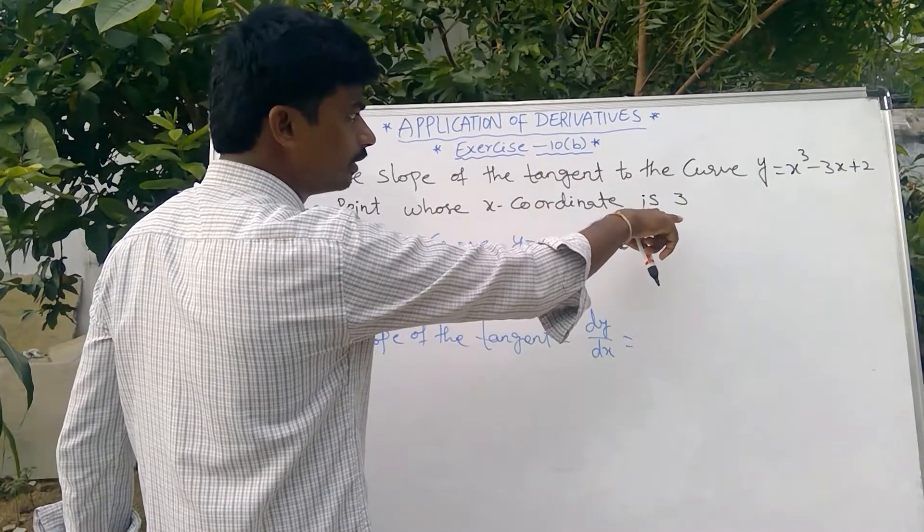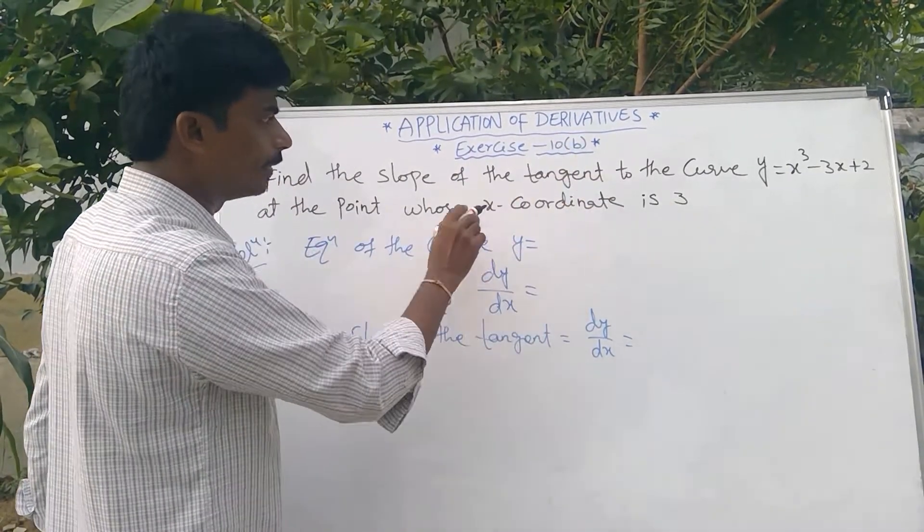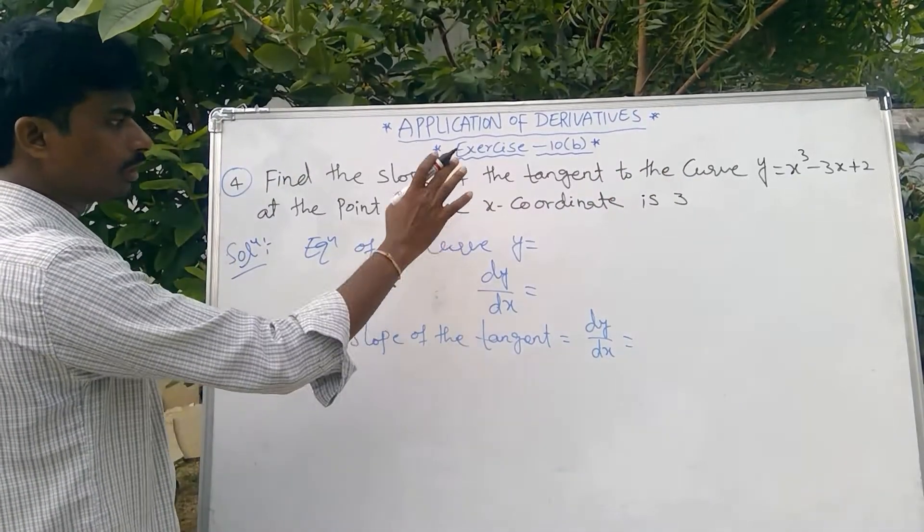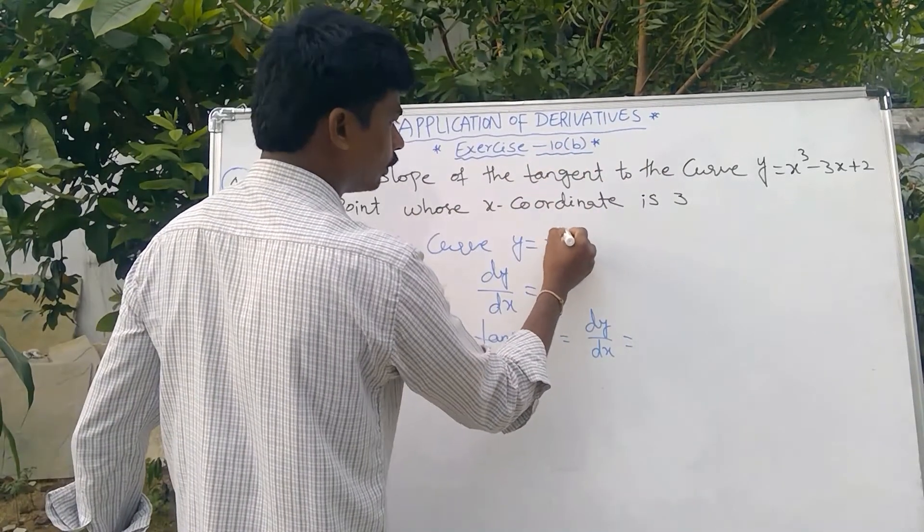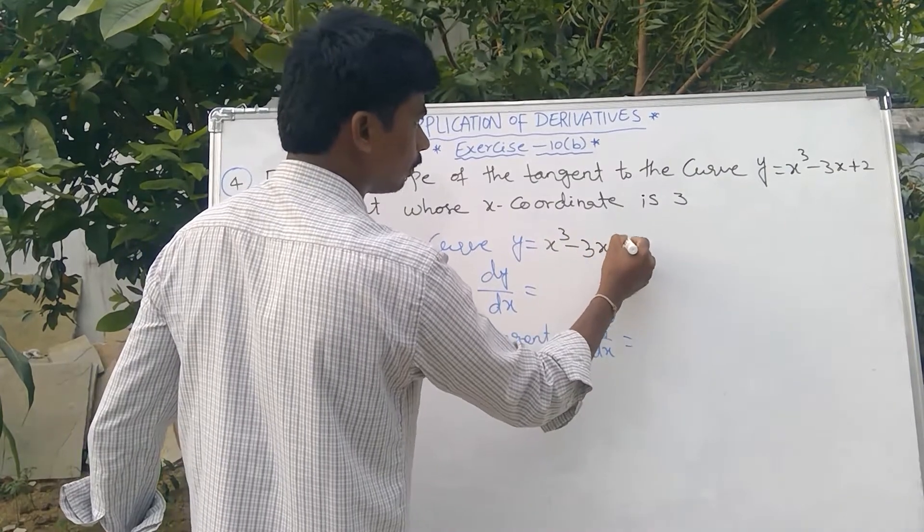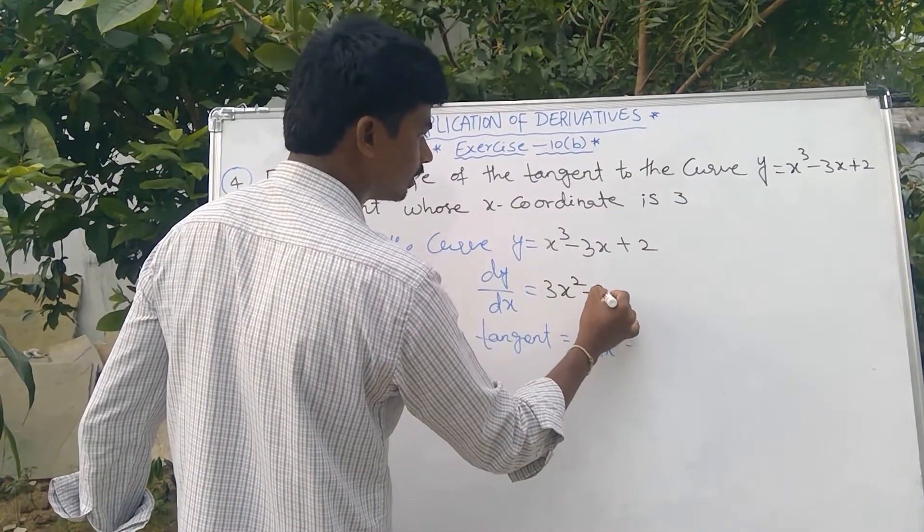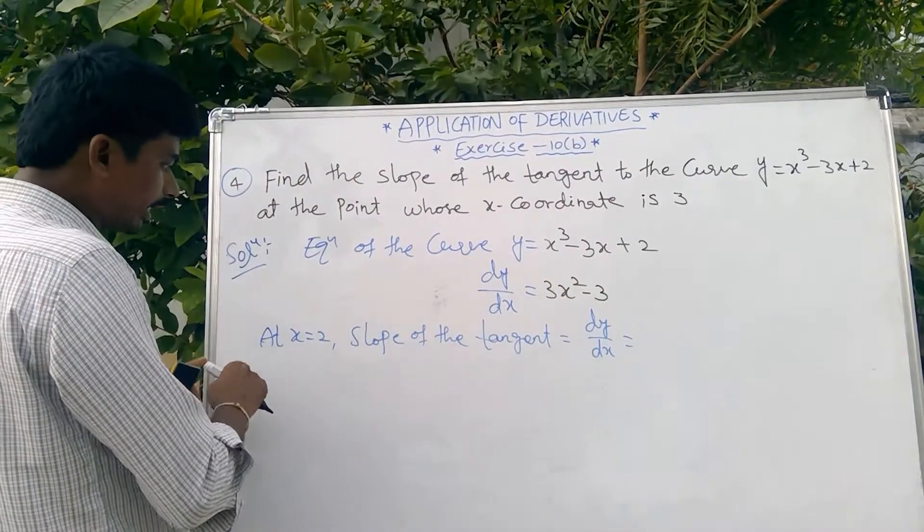Equation of the curve: y = x³ - 3x + 2. dy/dx = 3x² - 3. Now at x = 3...